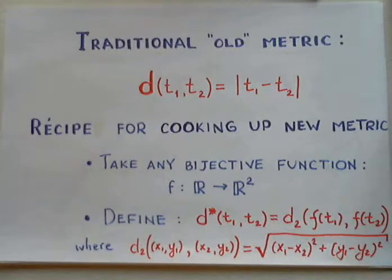We want to find a clever way of assigning a number given two points on a line. The recipe is as follows: given two points on a line, we transform them into points in the plane with the help of the given bijective function. Then we compute Euclidean distance between points in the plane and say that this number is actually a distance between the two points we started with.